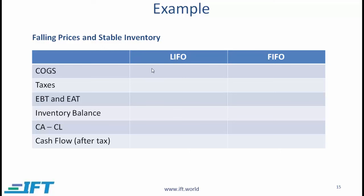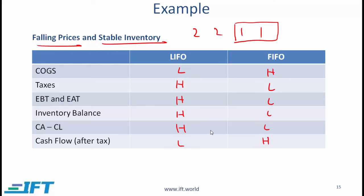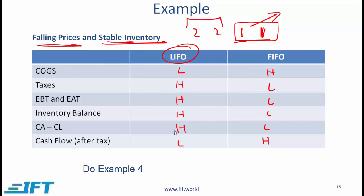Now fill out the comparison table for falling prices and stable inventory — pause the video before seeing the answer. Using the shortcut: falling prices means you initially buy inventory for $2 then for $1, so put in 2-2-1-1. With LIFO, you sell the $1 inventory first, so COGS is low. If COGS is low, expenses are low, profit is high, taxes are high, and earnings before and after tax are high. The inventory balance remaining is the higher-cost items, so inventory balance is high, working capital is high, and cash flow is low.